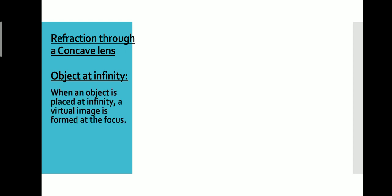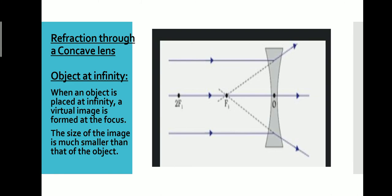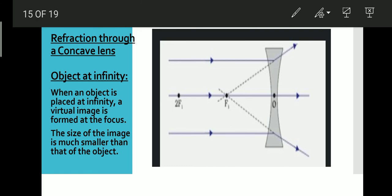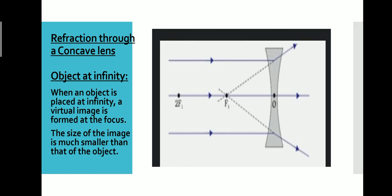Next is refraction through a concave lens. When an object is placed at infinity, a virtual image is formed at focus F, and the size of the image is much smaller than that of the object.